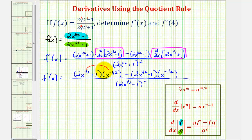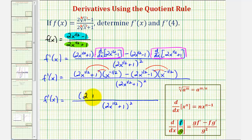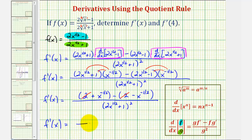Now we distribute x to the negative one half. Multiplying two x to the one half times x to the negative one half — adding exponents since the bases are the same — gives x to the zero, which equals one, so that's just two. Then we have plus x to the negative one half. Doing the same for the second group gives minus two, then minus x to the negative one half. Notice the twos cancel — two minus two is zero — and minus a negative becomes plus, so the numerator simplifies to two x to the negative one half, divided by two x to the one half plus one squared.